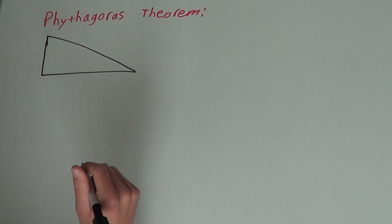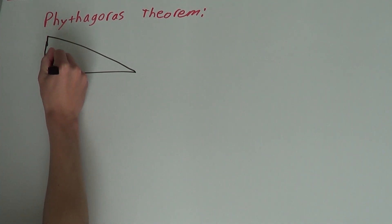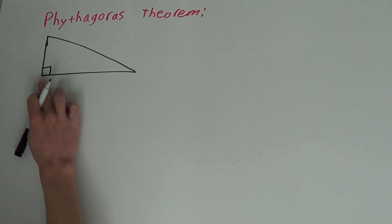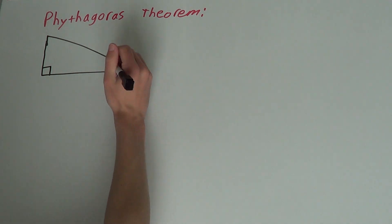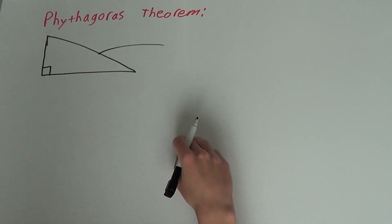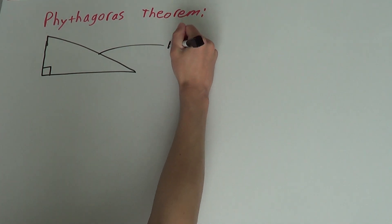So, Pythagoras Theorem will only work on right-angled triangles. That is a triangle that has an angle of 90 degrees. That is represented with a square like this. One term you will also need to know is what the longer side of a triangle is called. The longer side is called the hypotenuse.